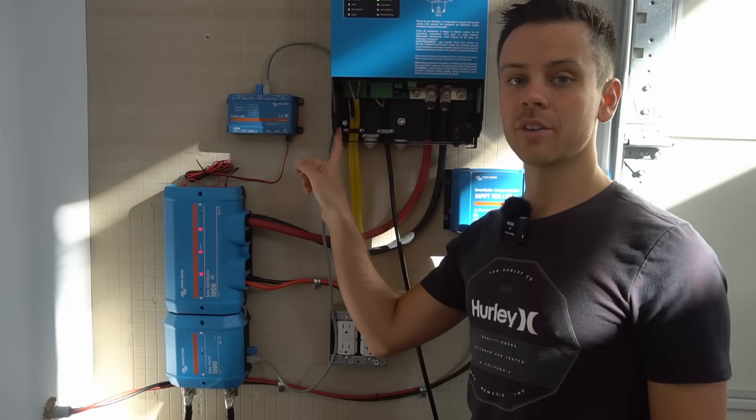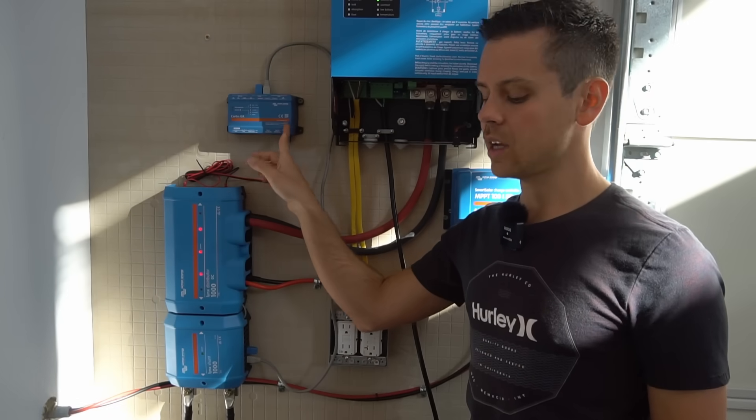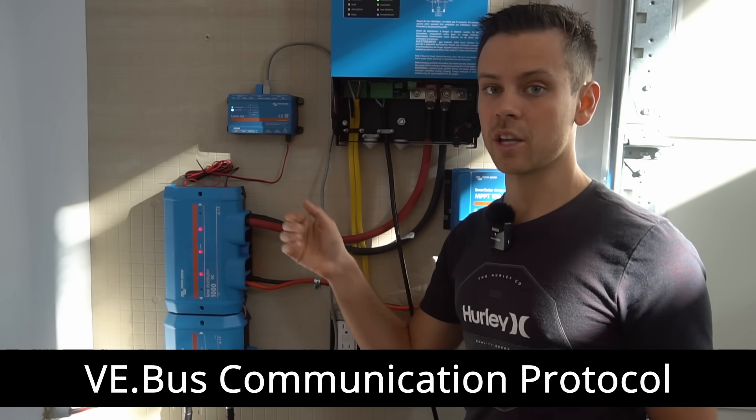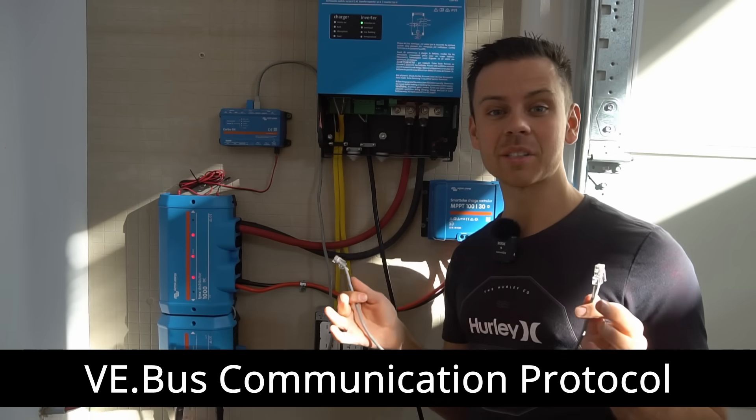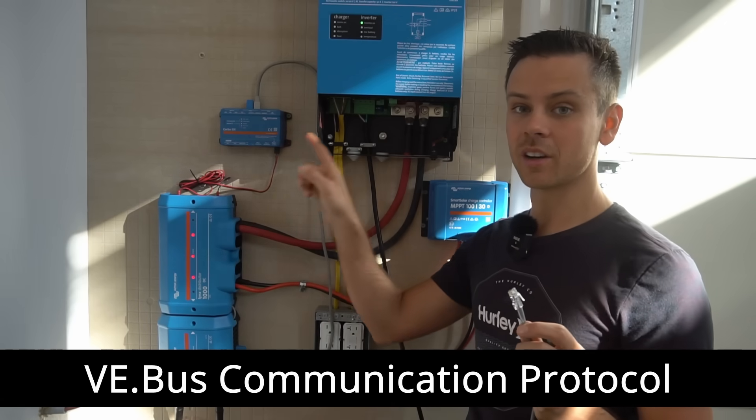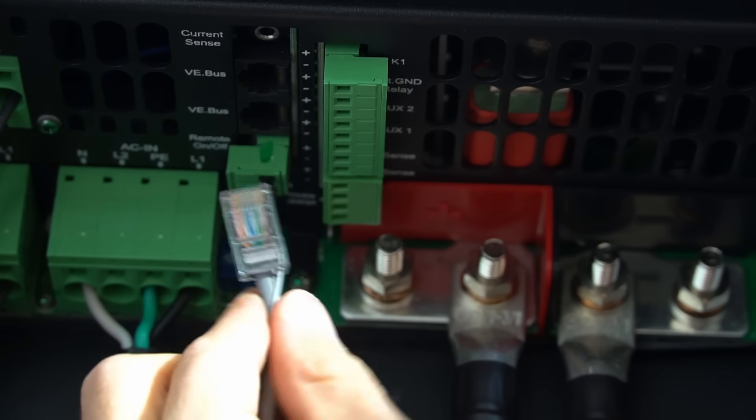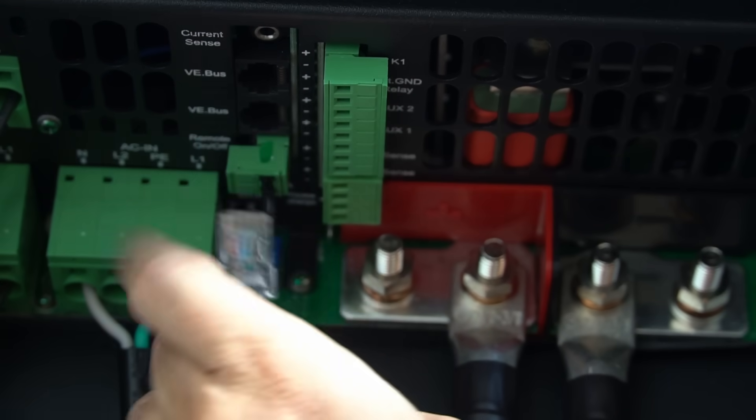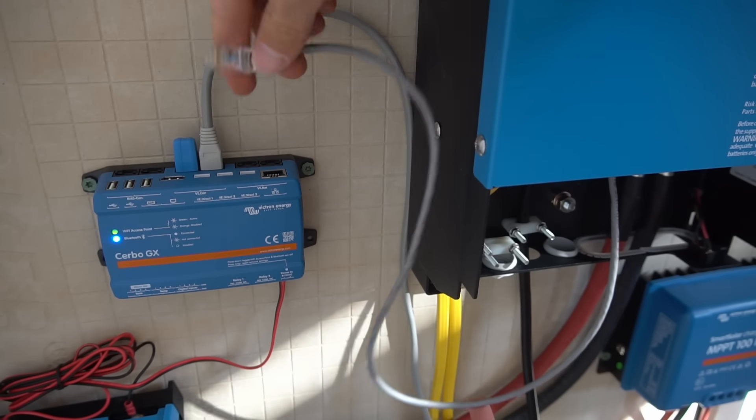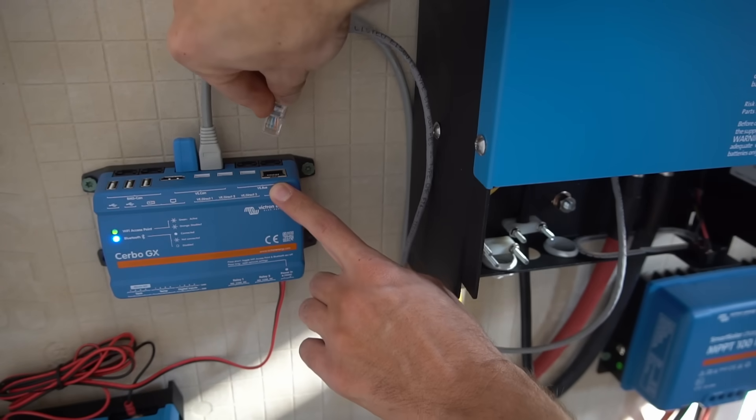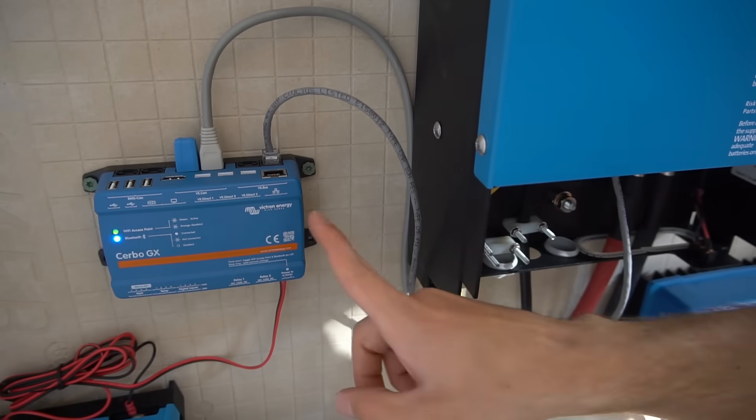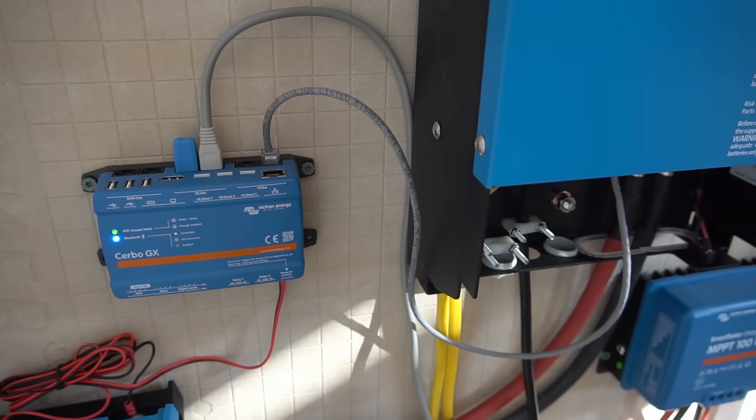Now let's connect the inverter to the Cerbo GX. And this requires using the Victron Energy or VE bus communication protocol. And personally, this is my favorite. All you need is one cable to connect the inverter to the Cerbo GX. So first we want to plug this cable into either one of the VE bus communication ports on the inverter. Now the other end of the cable needs to plug into the VE bus port on the back of the Cerbo GX. And that's it. This inverter is now communicating with the Cerbo GX.